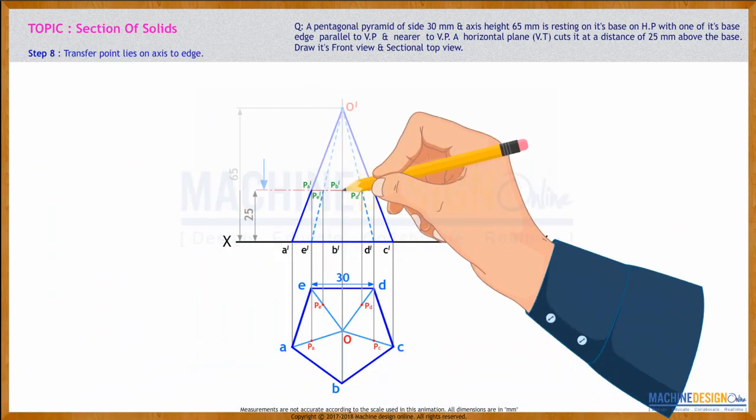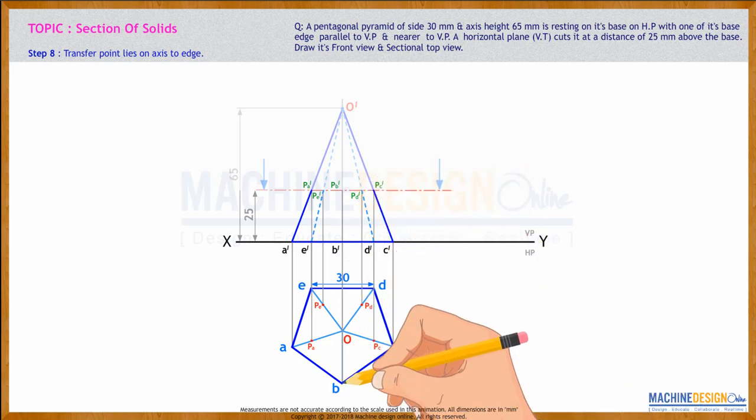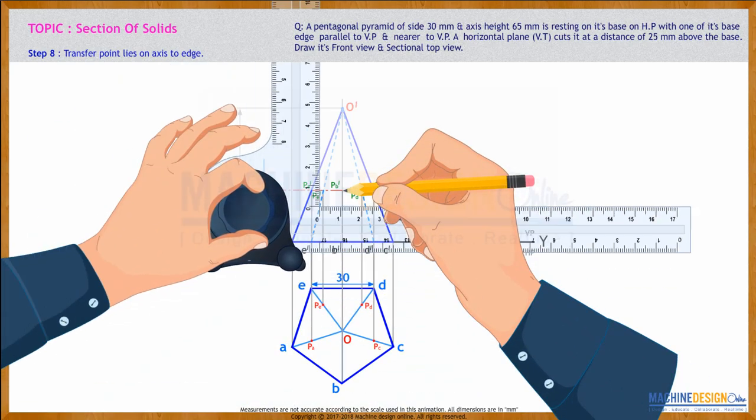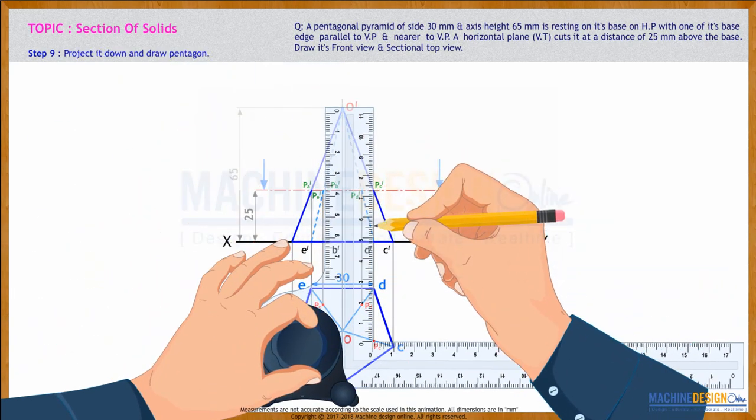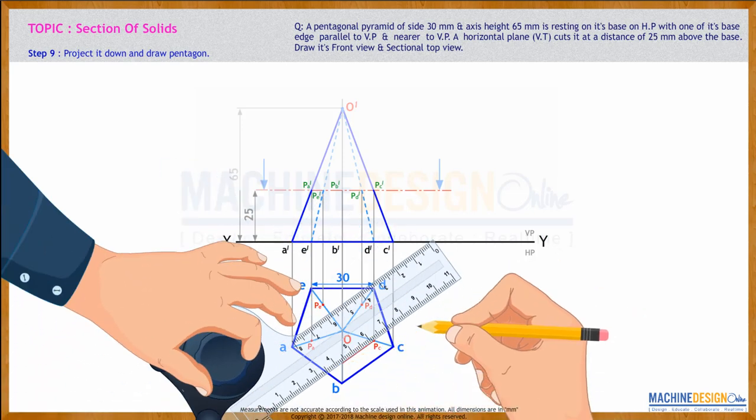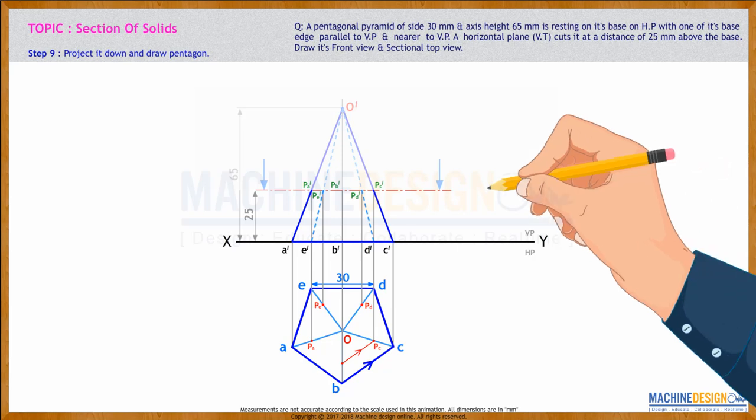Now to transfer this point which is PB'. If you draw straight, it is not intersecting anywhere. So what do we need to do? We need to transfer. We'll take this point to the extreme edge, then go down here. From here, we'll take a line parallel to BC.